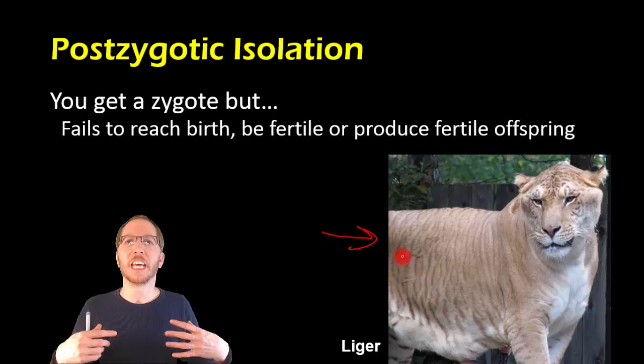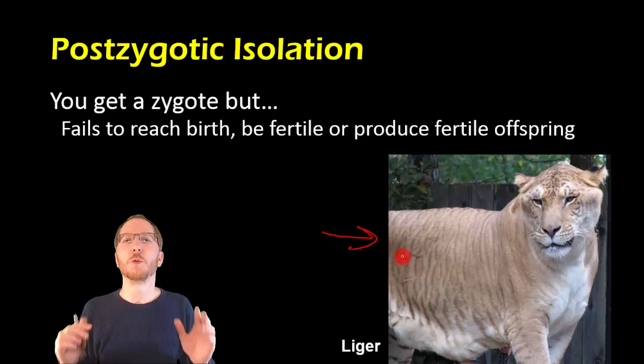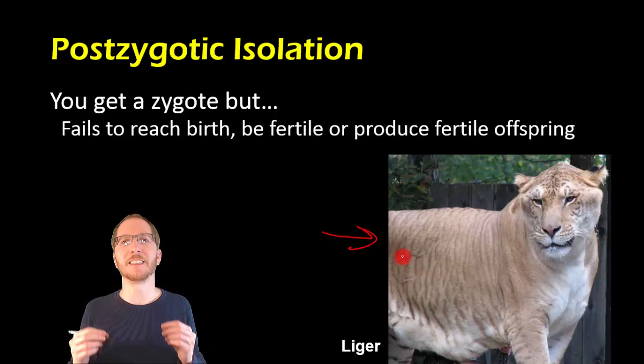Either way, we cannot for long periods of time continue to have these organisms live and successfully reproduce. So we still have isolation. But in this case, just a bit more interesting where you do in some cases get an actual offspring or at least get a pregnancy, so it appears as though it's working.